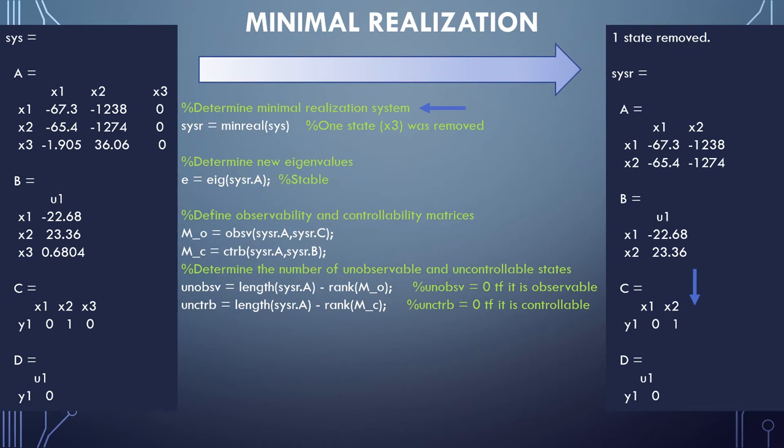Now that we have a new minimally realized system, we can confirm that it has the desired characteristics. We determine the new eigenvalues, both of which are negative. Then we recalculate the observability and controllability matrices and evaluate their rank. Both are indeed full rank indicating that we now have a state space model that is both observable and controllable.